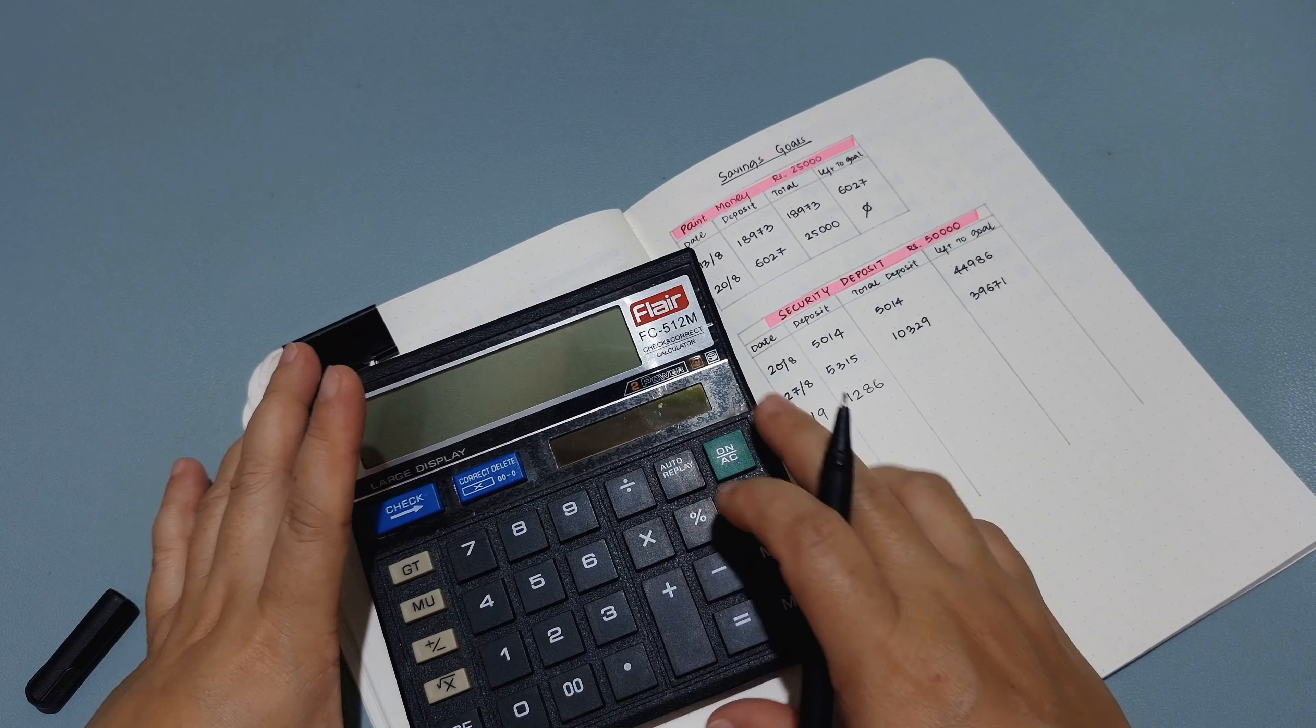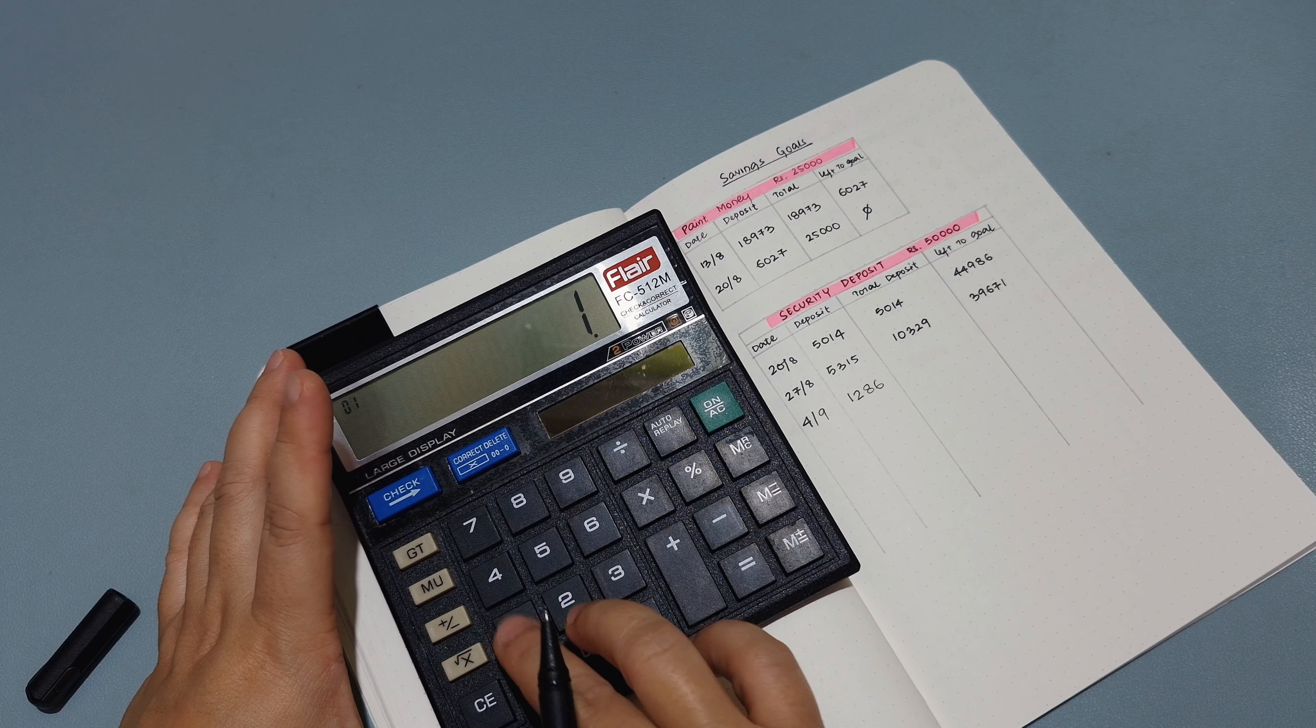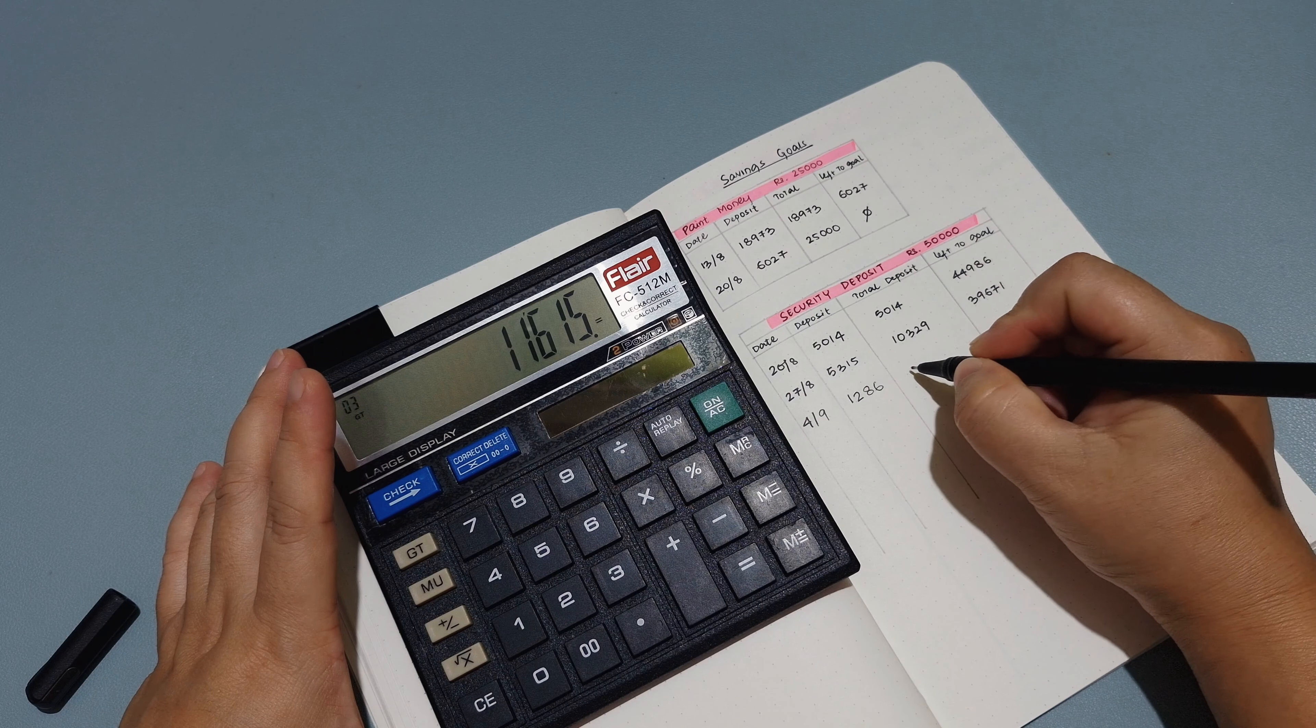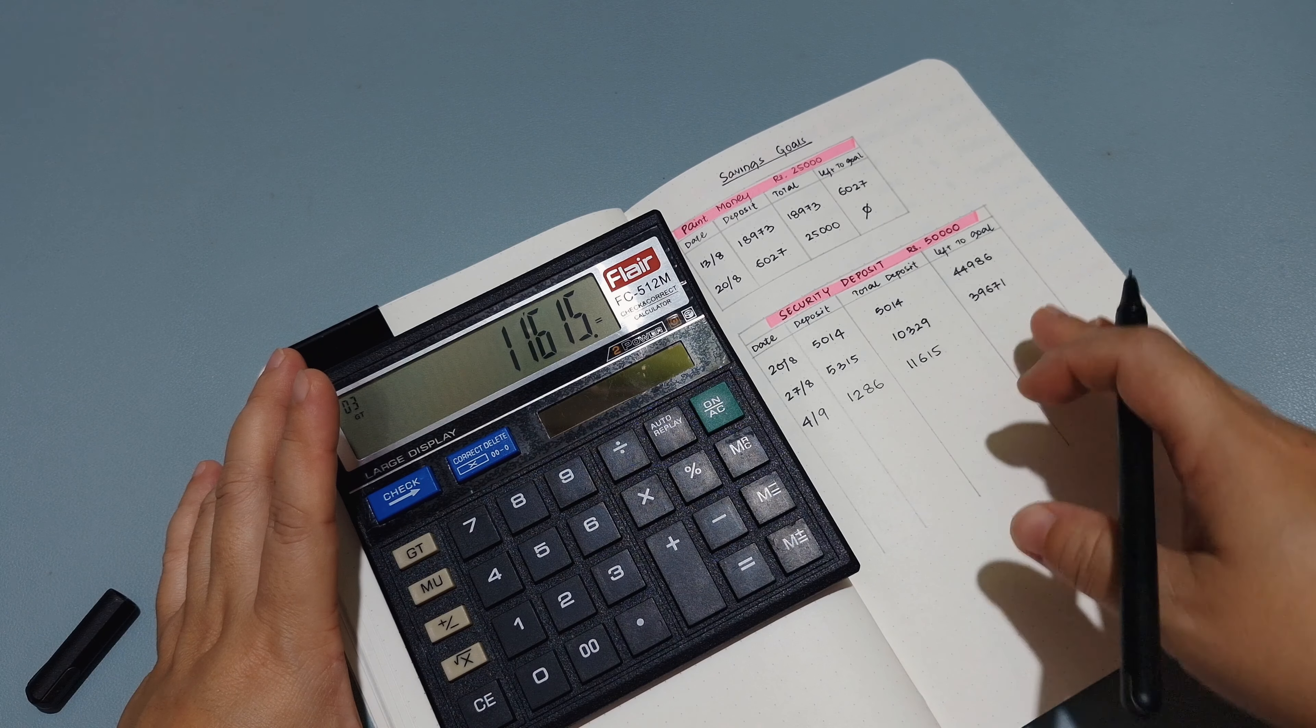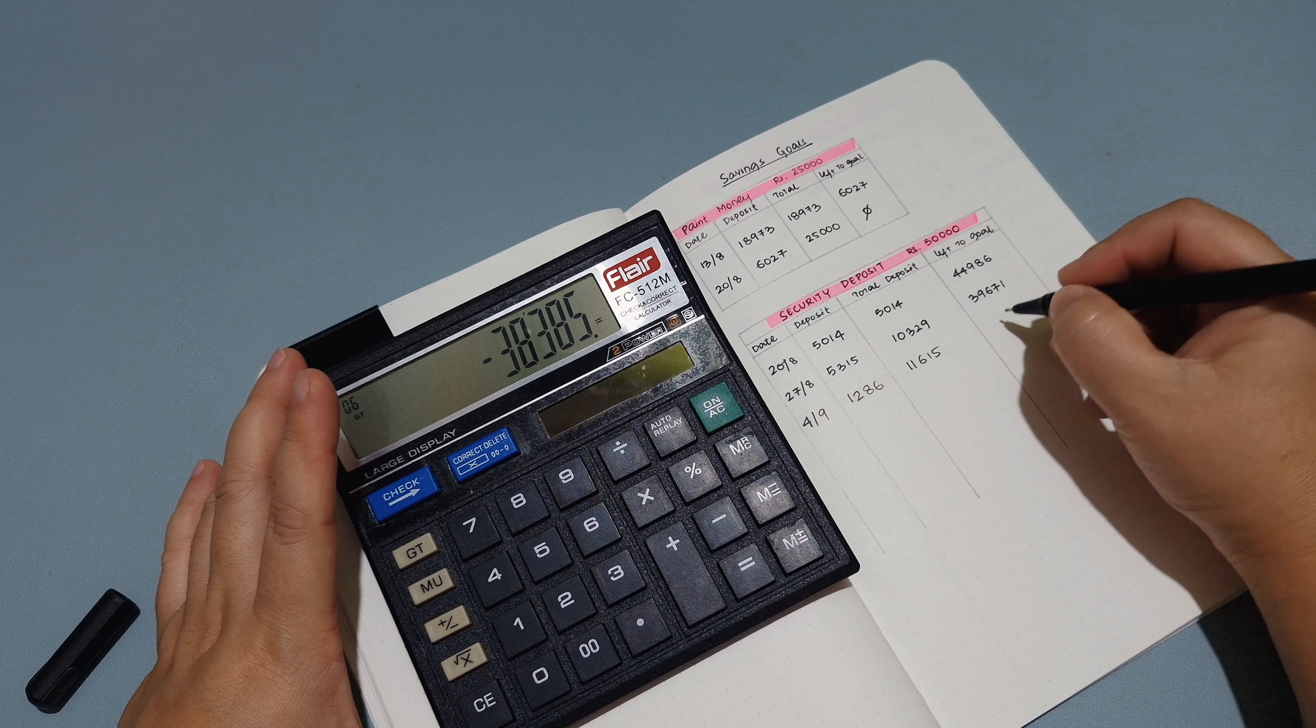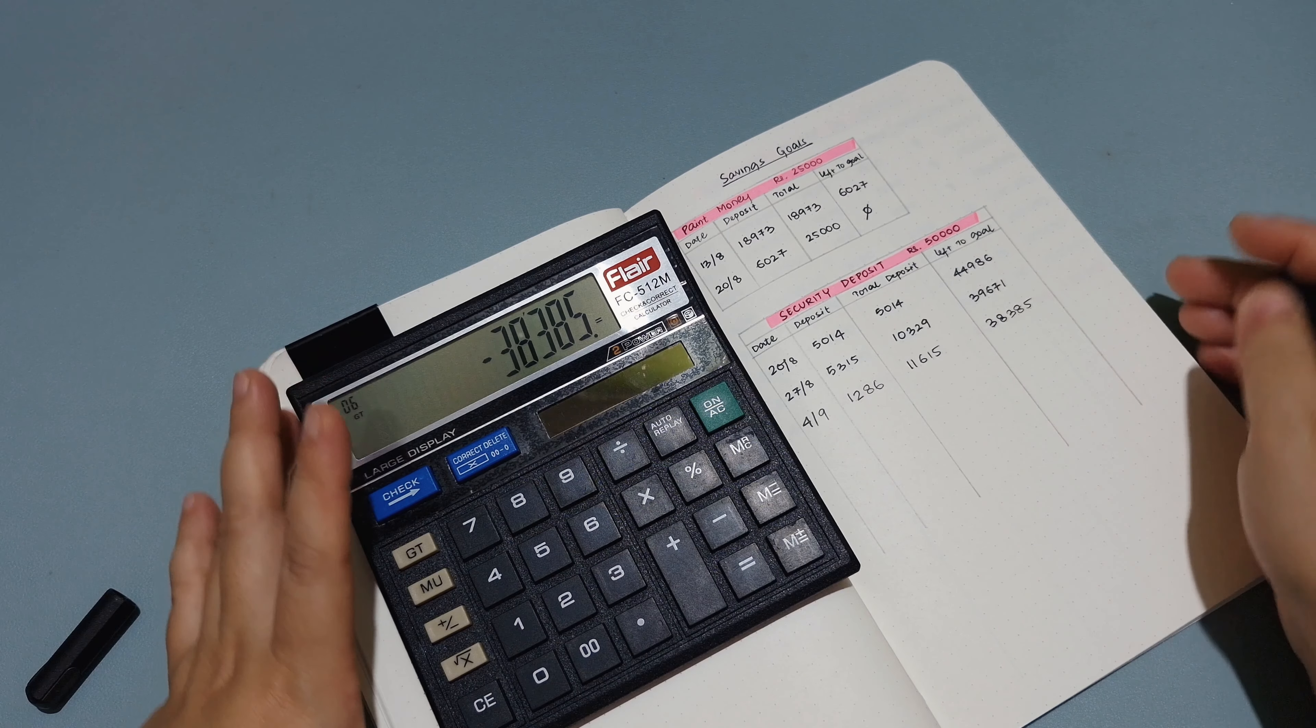So the date is 4,9 and the amount was 1,286 rupees. So now I'll add both numbers. The total deposit so far into this savings goal is 10,329 plus 1,286 that adds up to 11,615 rupees. So which means the amount that's left to reach the goal will be 50,000. I still need 38,385 rupees to reach this goal.